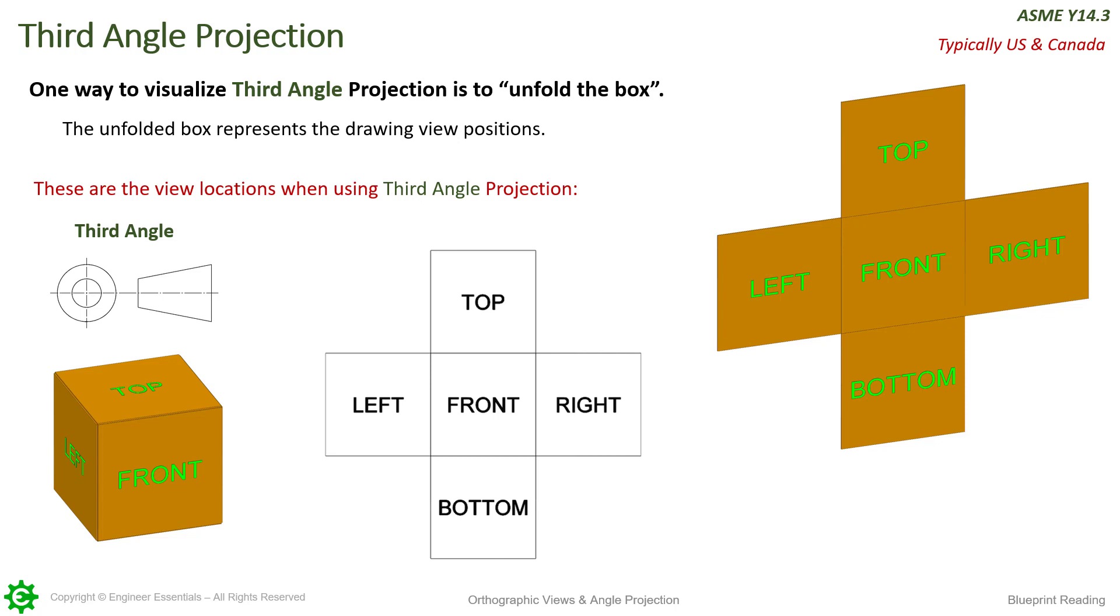You can see the third angle symbol here, and you can see that we are unfolding the box to form this shape. The left side would be the top of the cone, looking down on it, and then the right view is the view how it would look from the right side. That is why we use this symbol for third angle.